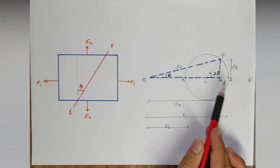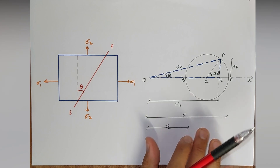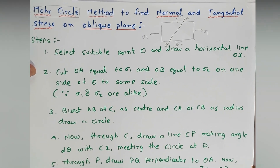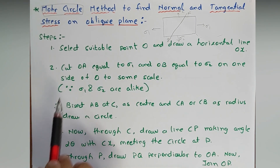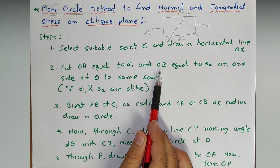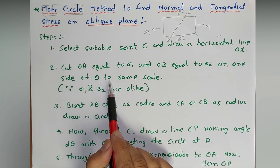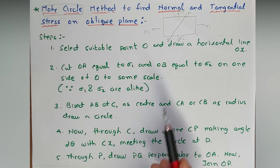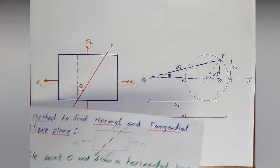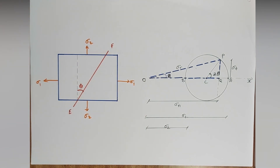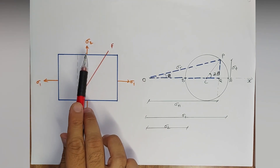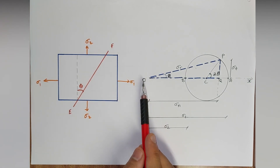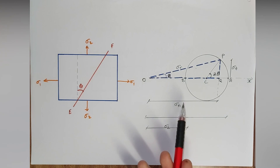So this is OA and this is OB. Both σ1 and σ2 are taken on the same side because they are in the same direction — both are positive. σ1 is always positive, and if the direction of σ2 is similar to σ1, it is also positive, so both are marked on the same side.